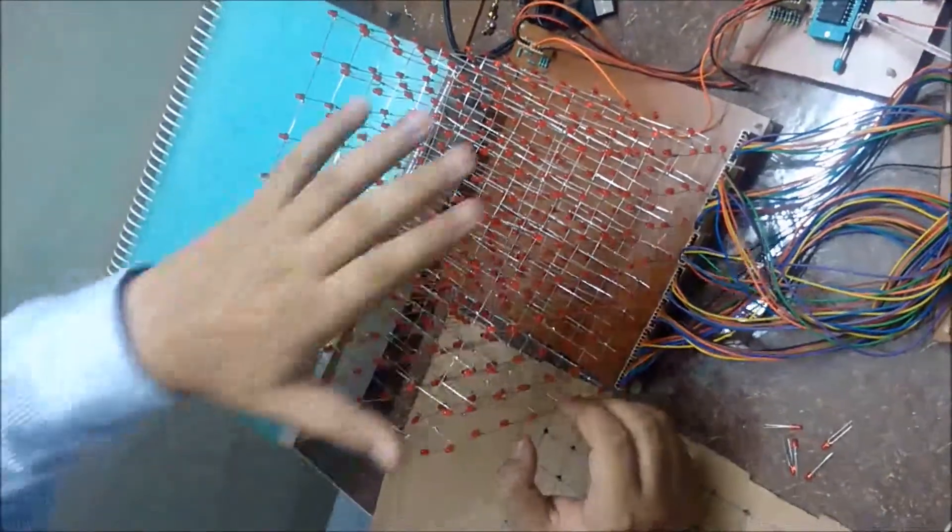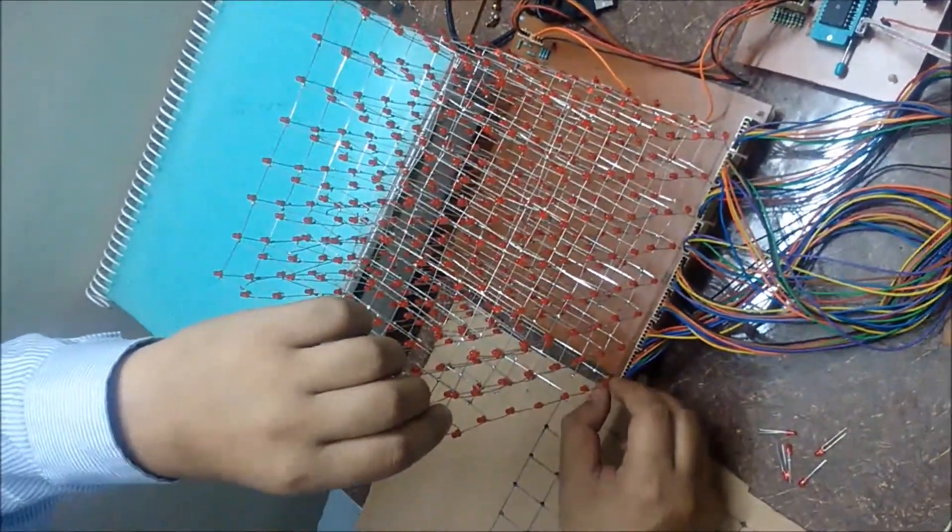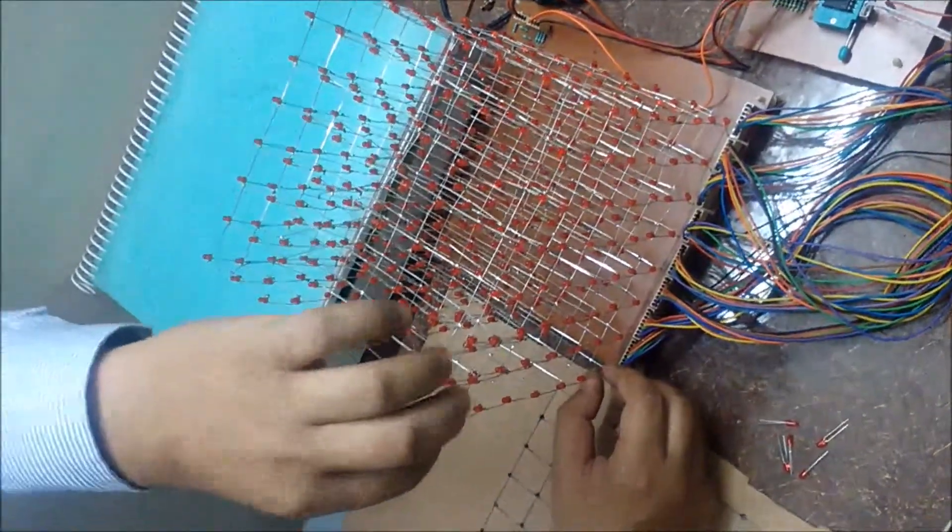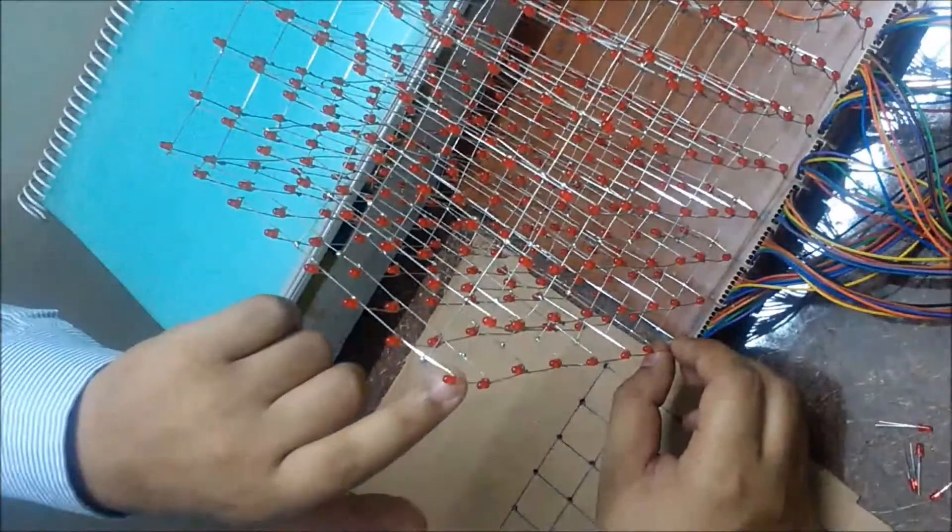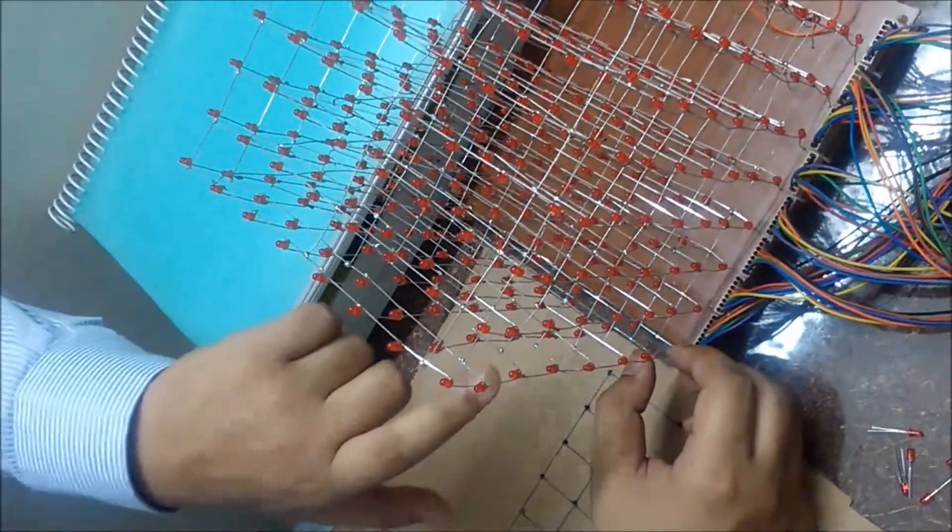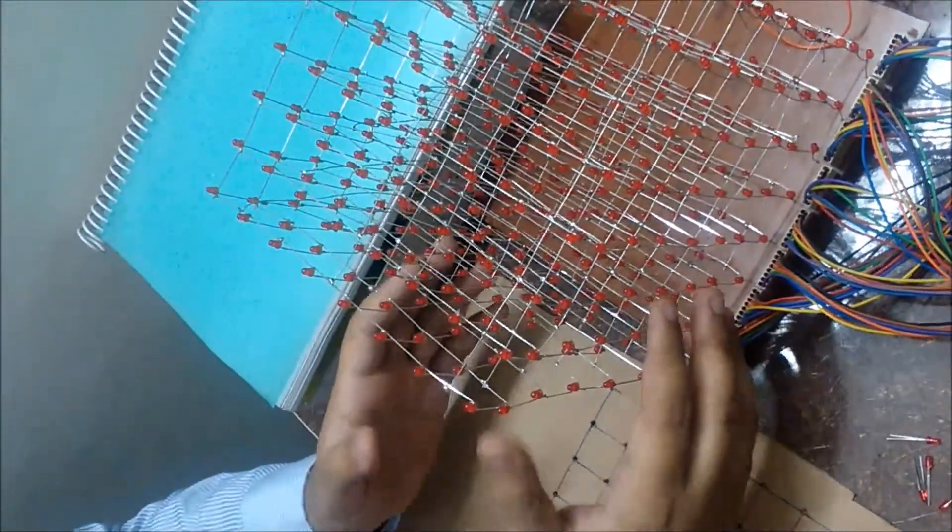For example, if you turn on this row and set this column to 1, then this LED will glow. Only this LED will glow. If you turn on row 2, this LED will glow. Row 3, this LED will glow. So you can turn on one or multiple LEDs at one time.